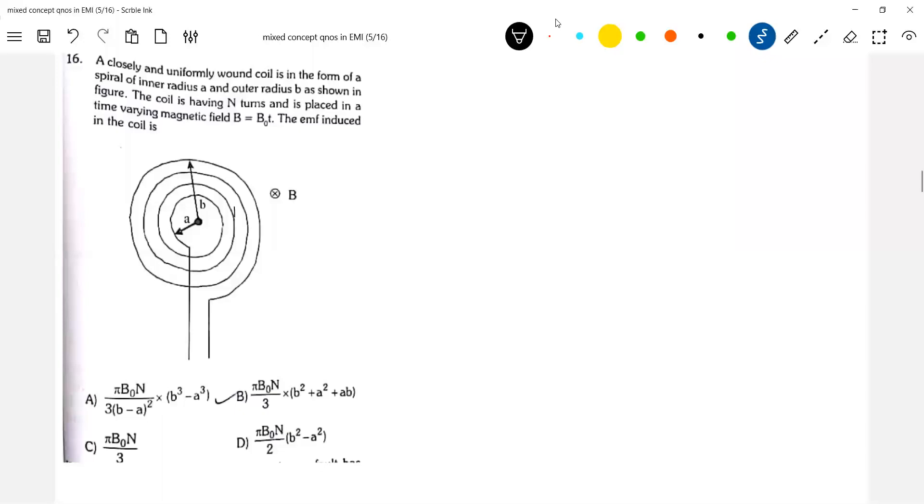So, what is the EMF induced in the coil? It is asking the EMF induced in the coil. Look at, it is a spiral. Somewhere you have come across this in the Magnetism chapter. In the Magnetism chapter, we have come across this condition.